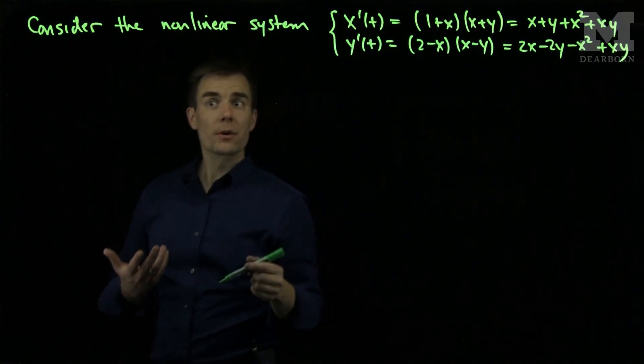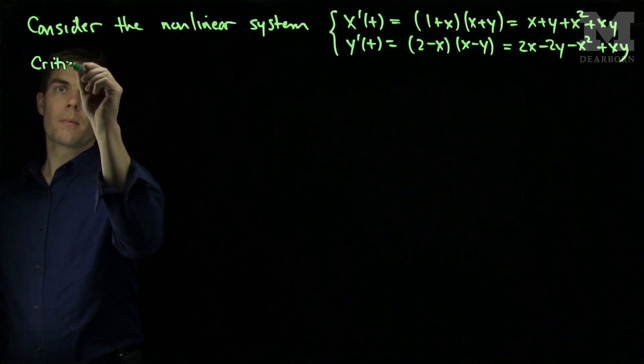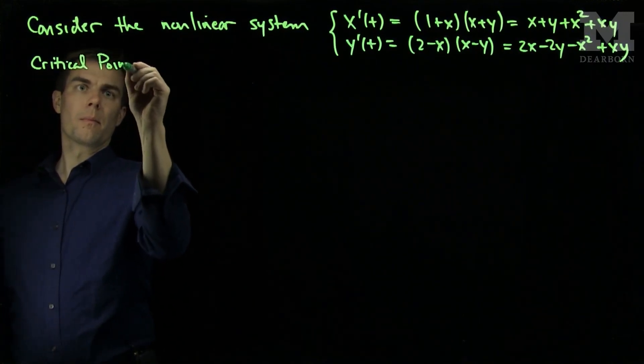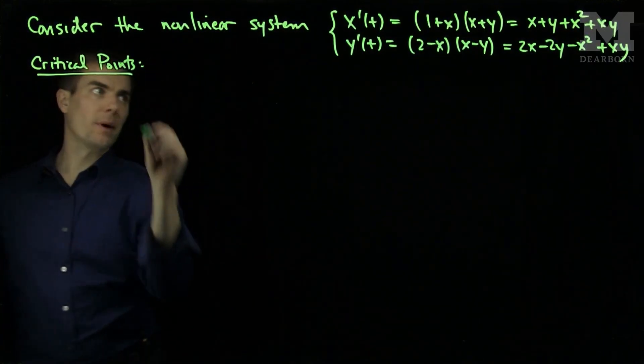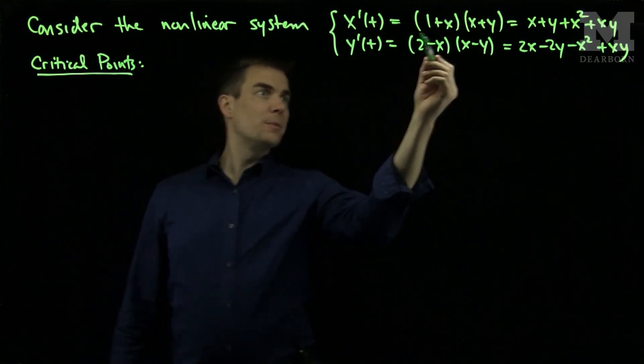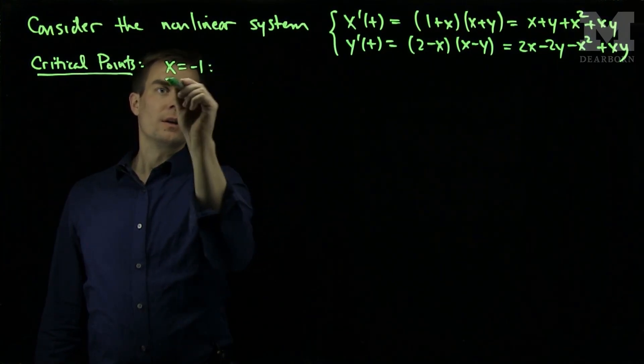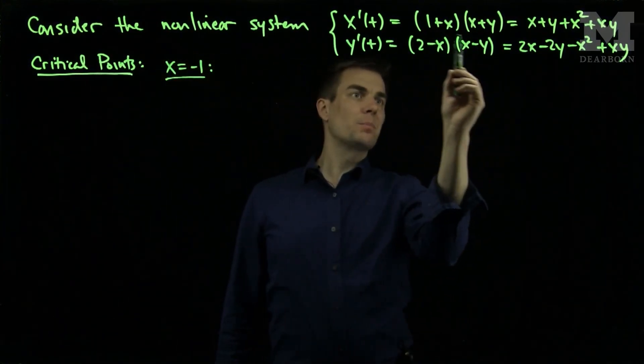So I'd like to first find the critical points of this system. The critical points can be found by setting these functions equal to zero. Well, the first equation can be made equal to zero if x is equal to negative 1.